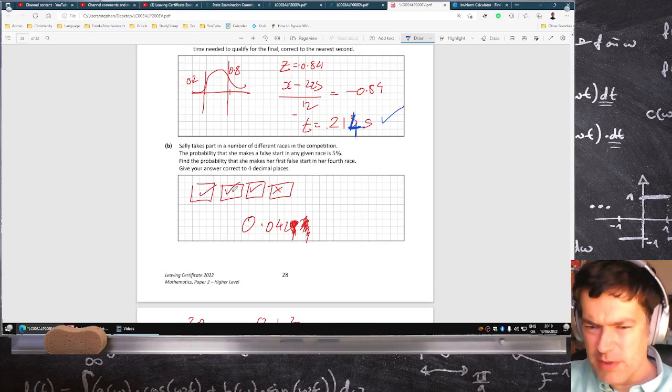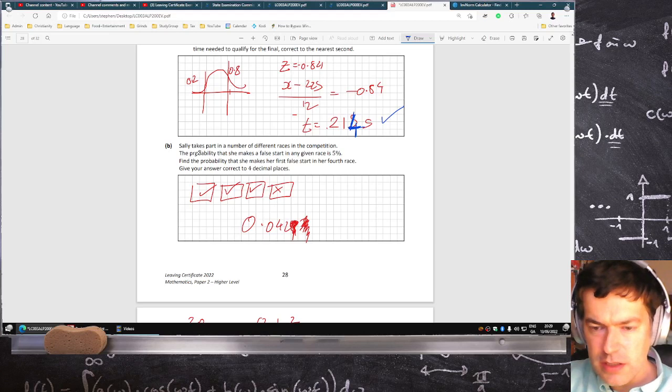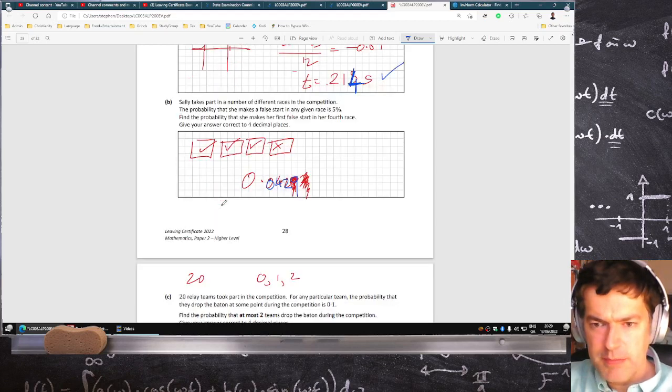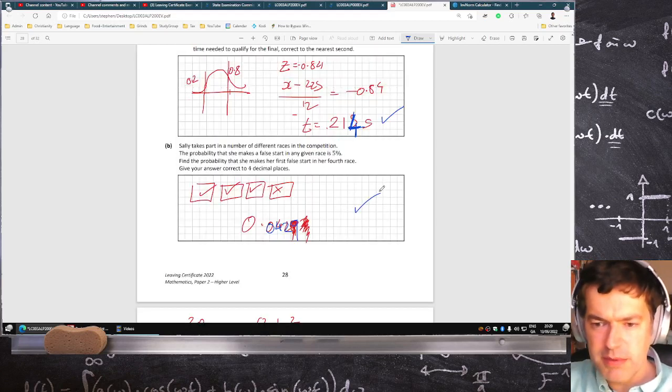This one here, I think some people are asking, is it a Bernoulli trial? I don't think so. Yeah, it's good start, good start, good start, bad start, so 0.429 is the answer here. So I think that's okay.